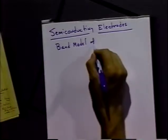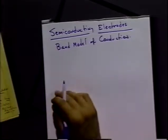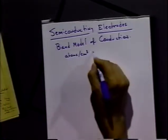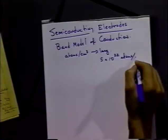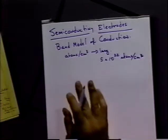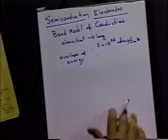In order to understand semiconducting electrodes, the normal thing to talk about is what they call the band model of conduction. The band model says that when a solid is formed, there's a large number of atoms — about 5 times 10 to the 22nd atoms per cubic centimeter. That large number of atoms in one spot means there's going to be a large overlap of the energy levels that existed in each of those atoms — an overlap of energy states — which is what we consider as our band model.